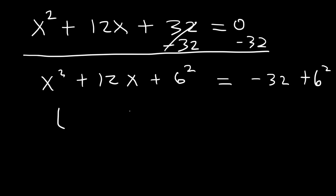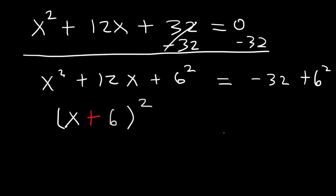You can literally see everything that you need. It's going to be x, and then whatever this sign is — it's positive — so x plus 6, squared. That's how you can factor it. On the right side we have negative 32 plus 6 squared. 6 times 6 is 36, and negative 32 plus 36 is 4.